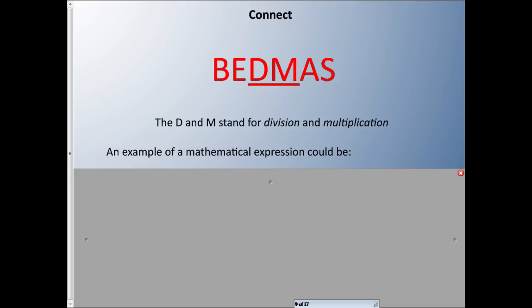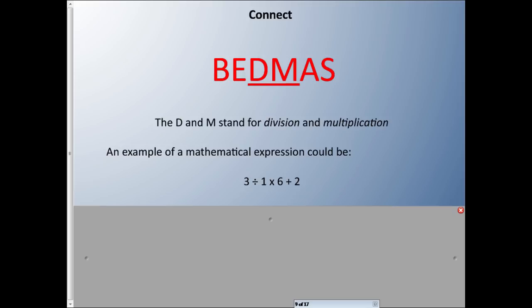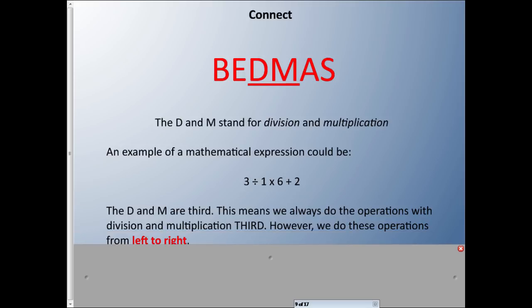D and M together stand for Division and Multiplication. An example expression could be 3 ÷ 1 × 6 + 2. D and M are third — we always do division and multiplication third. However, this is important: we do these operations from left to right. You'll notice there's both a division and a multiplication here; they're at the same level, so we go left to right — division happens first, then multiplication.